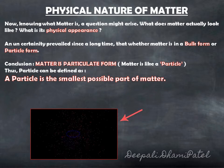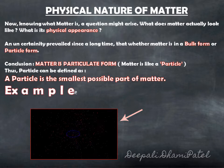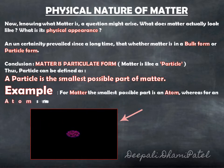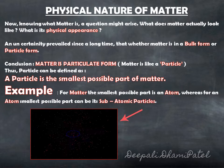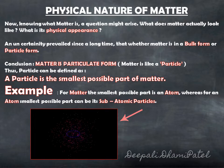Matter can be defined as the material which occupies space, has volume, and has mass that we understood yesterday. Now, this matter is made up of particles, and a particle is the smallest possible part of this matter. For example, matter's smallest possible part is an atom, whereas an atom's smallest possible part can be its subatomic particles.